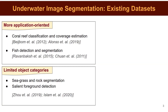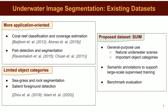Moreover, the existing large-scale underwater datasets are tied to specific applications such as coral reef classification and coverage estimation, or fish detection and segmentation. Other datasets contain either binary annotations for salient foreground pixels or semantic labels of a few object categories such as sea grass, rocks, or sand. Due to these reasons, learning-based semantic segmentation methodologies for underwater imagery have not been explored in-depth in the literature.